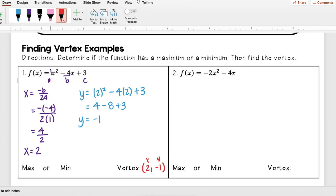Now this one also asked me to determine if the function has a maximum or minimum. To determine that, I need to see whether my a value is positive or negative. Well, my a here is equal to 1, which is greater than 0. And we learned when it's positive, that's going to be a minimum.